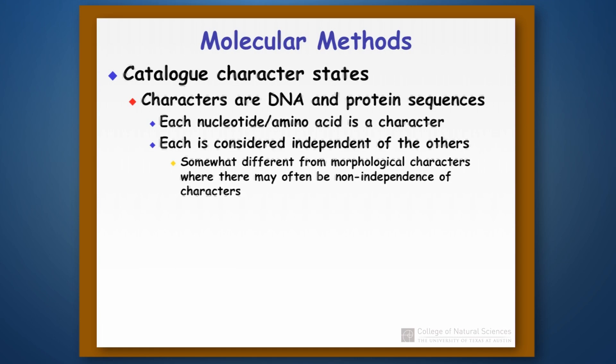This is different from morphological characters, where there might be non-independence of characters. For example, the left side of your body is very similar to the right side of your body because they share a common developmental program. You wouldn't want to measure both sides and treat that as two independent pieces of information. But with molecular data, we assume in most cases — with some exceptions — that each position in a DNA or protein sequence is independent of all the others.